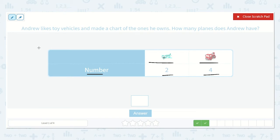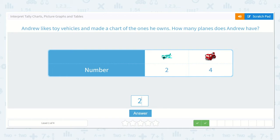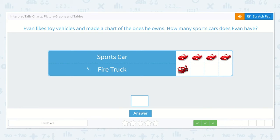Let's look at what the question asked us. How many planes does Andrew have? Well, I can see the plane here and the number right under it. So I know that these go together. How many planes does he have? Yes, two. Great job. Let's type two.